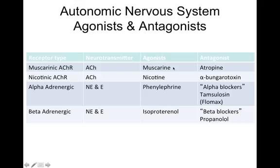Nicotinic receptor agonists and antagonists: the agonist of nicotinic receptors is nicotine — it makes sense, nicotine actually activates nicotinic receptors. Where do you find nicotinic receptors? In the sympathetic nervous system, the parasympathetic nervous system, and the somatic motor system. Specifically, they're located on the post-ganglionic neurons in both the sympathetic and parasympathetic systems. So what if you increase the activity of nicotinic receptors?